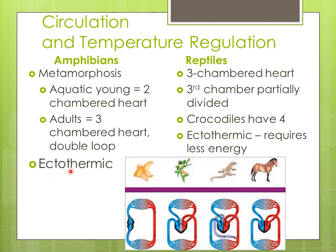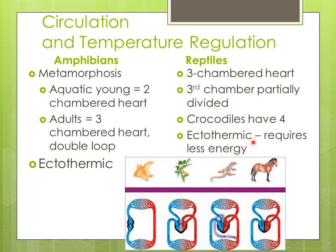Amphibians are ectothermic, meaning their body temperature is regulated by their surroundings — sometimes called cold-blooded, though that doesn't mean their blood is actually cold; it means their temperature changes with the environment. Reptiles also have a three-chambered heart, similar to adult amphibians, with the same double loop — blood goes out to the lungs, back to the heart, out to the rest of the body, back to the heart. Crocodiles actually have a four-chambered heart like humans, which is even more efficient. Reptiles are also ectothermic — we've all seen lizards or turtles basking on a rock to soak up heat from the sun.